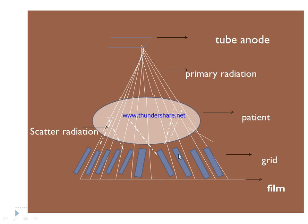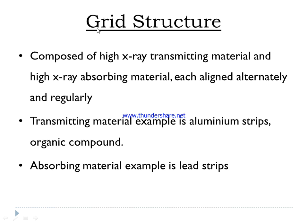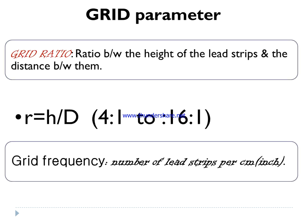Between the lead strip layers, interspace material is present — this is essentially the grid. Below the grid is the film. The patient is shown, with dotted lines representing scattered radiation and the solid line representing primary radiation from the x-ray tube. Grid structure is composed of high x-ray transmitting materials and high x-ray absorbing materials arranged alternately. Transmitting materials include aluminum strips and organic compounds; absorbing materials include lead strips.